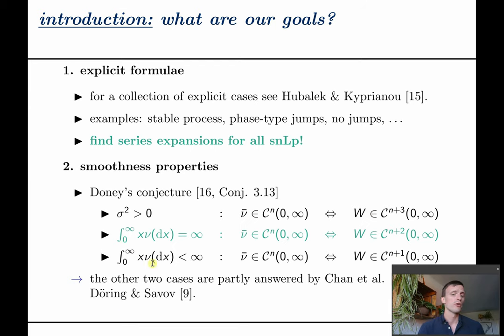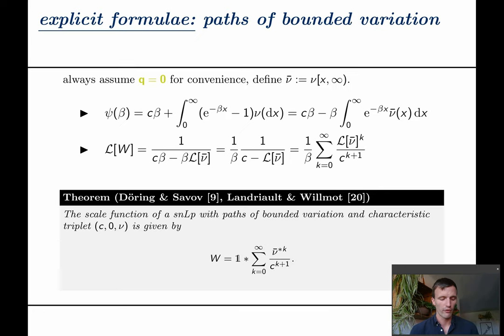Since case 1 and 3 are partly answered by Chan et al. and Döring and Savov, our main focus is the case when there is no Gaussian component and we have paths of unbounded variation. Let us start with the first goal and therein with the bounded variation case.